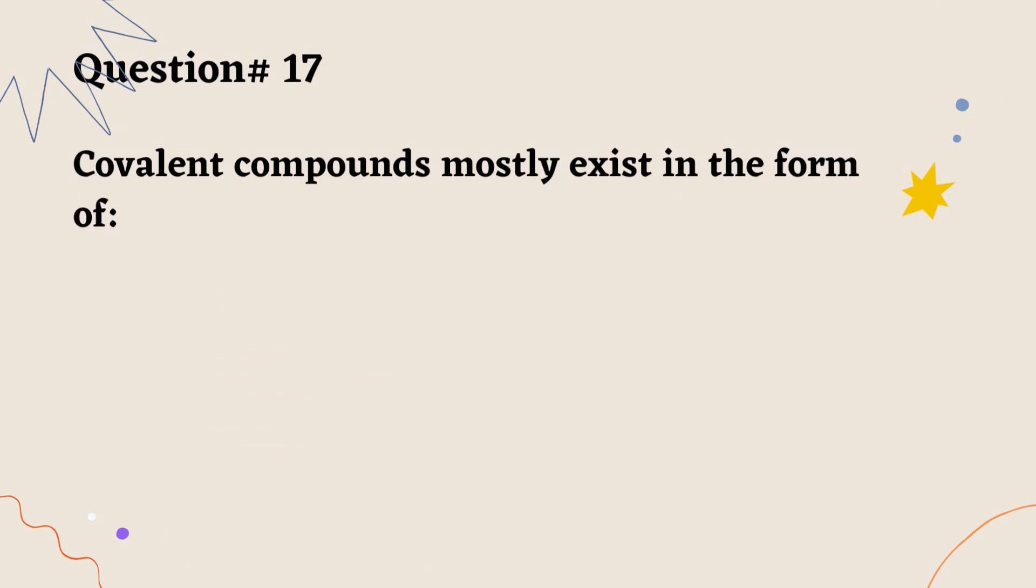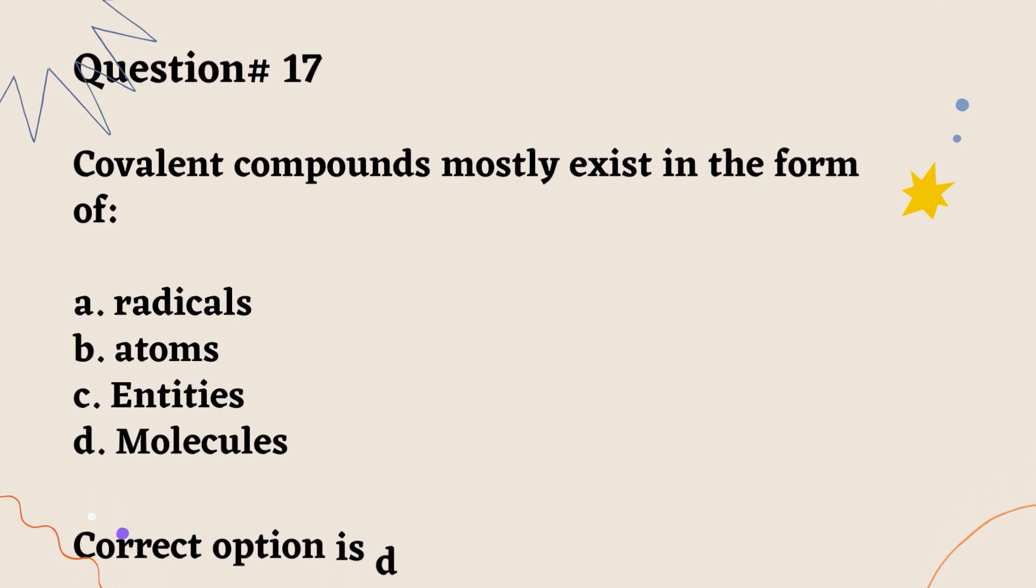Question number 17. Covalent compounds mostly exist in the form of: A. Radicals. B. Atoms. C. Entities. D. Molecules. Correct option is D.